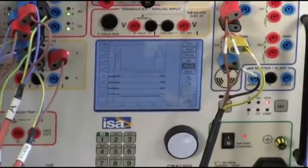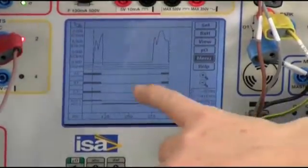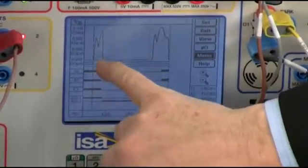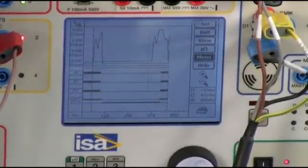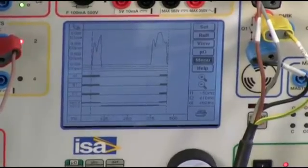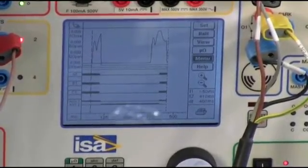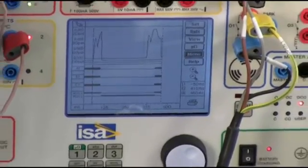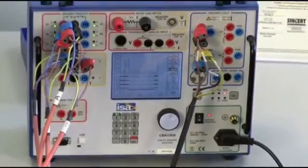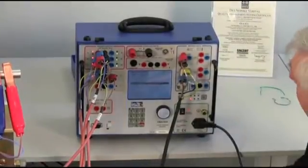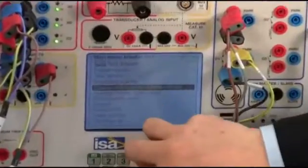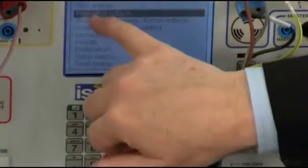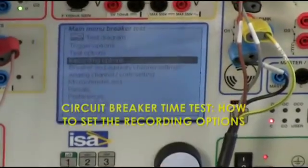And here we are. What do we have here? Here is the open coil current, the closed coil current, but I don't see the next open coil current. Why? Because I forgot changing the test recording to duration. Once I have set the breaker auxiliary contacts, there is another thing that I have to do, that is set the recording option.